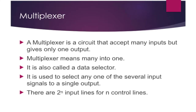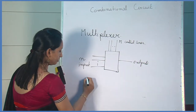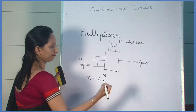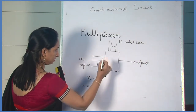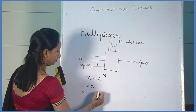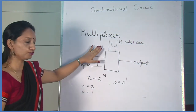A multiplexer is a combinational circuit which accepts many inputs and gives only one output. It is also known as many-to-one. Multiplexer is also called a data selector because it selects only one input out of several input signals to a single output. The relation between input and control lines is n equal to 2 to the power m.